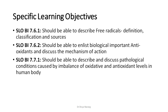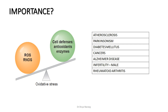The specific learning objectives for this lecture are: you should be able to describe what free radicals are, their classification, and sources of their generation; you should be able to enlist important antioxidants and the various cellular defenses against free radical injury and their mechanism of action; and you should be able to describe and discuss pathological conditions caused by imbalance of oxidative and antioxidant levels in the human body.